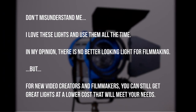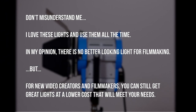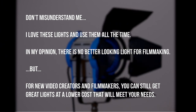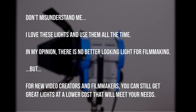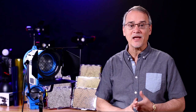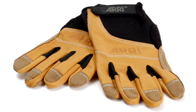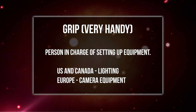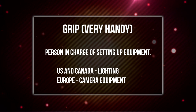Traditional lighting. These are usually the type of lights you think about on a commercial film set, theater, or concert. Although they output a ton of light, they are bulky, heavy, need a ton of power to work, and get unbelievably hot — hot enough to instantly melt the skin on your hands. Many people use grip gloves to keep from melting their skin. A grip is the person in charge of setting up equipment — in the US and Canada, grips set up the equipment to support the lighting, whereas in Europe they just handle the camera equipment.